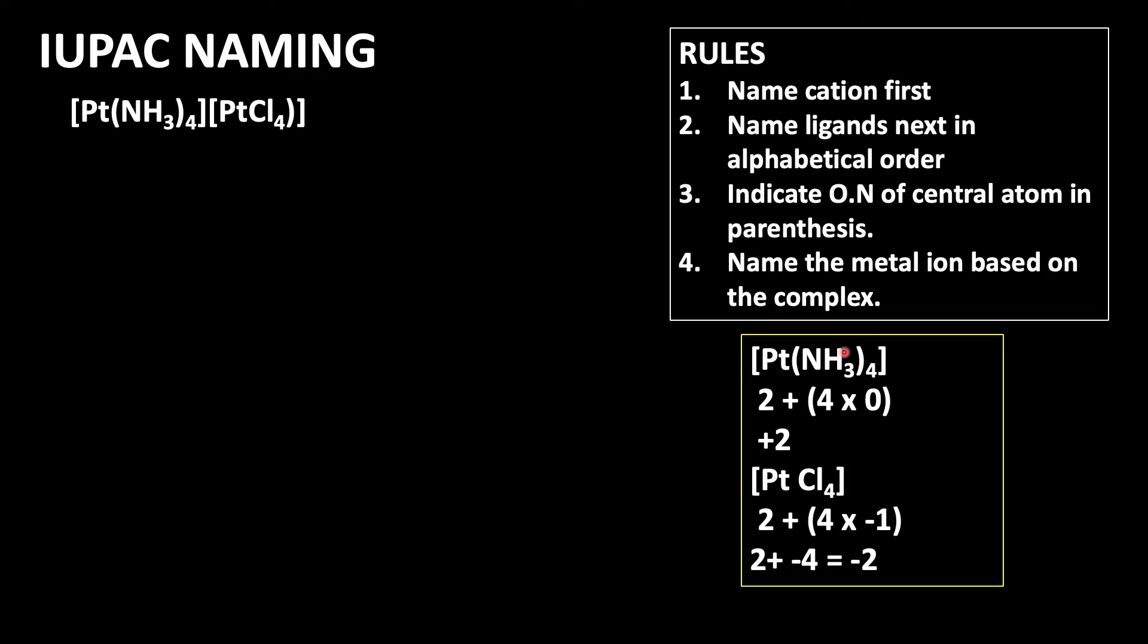Then [PtCl₄]: 2 plus, and the chloride ion carries minus 1 charge. So 2 plus minus 4 equals minus 2. So it means this is the anionic complex.